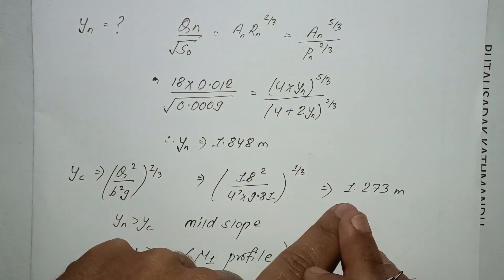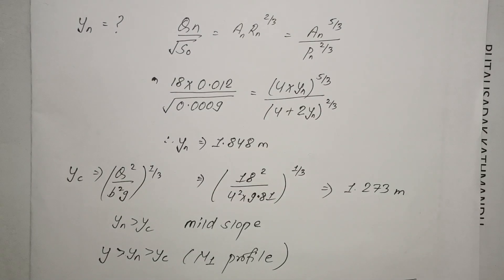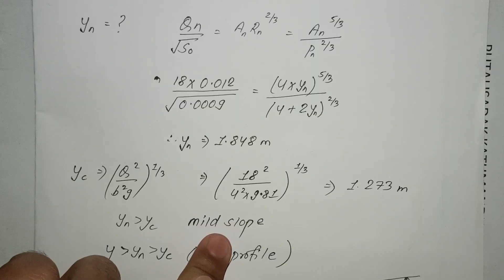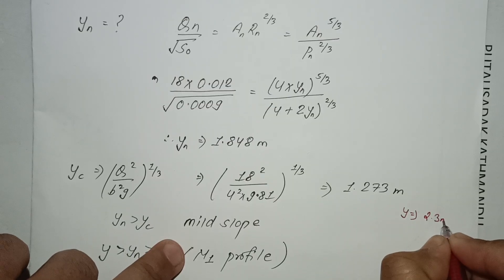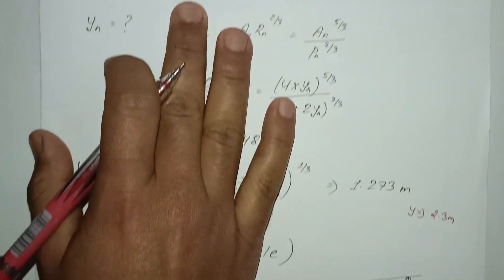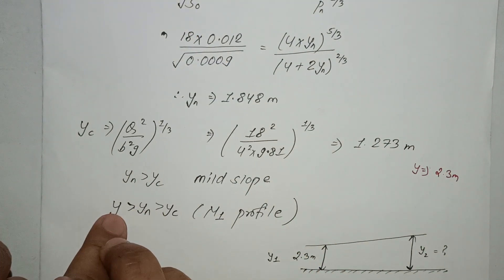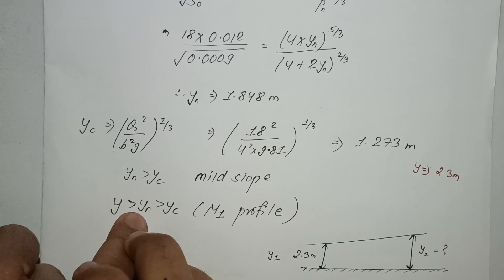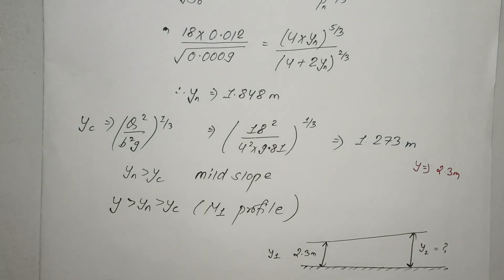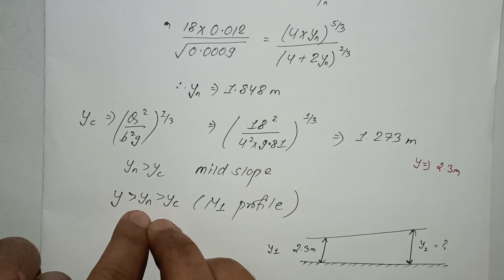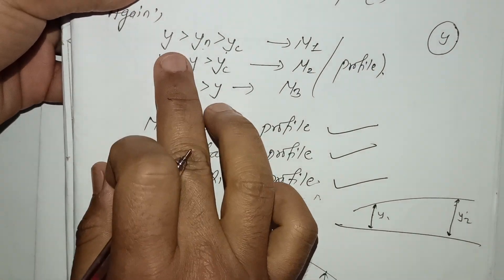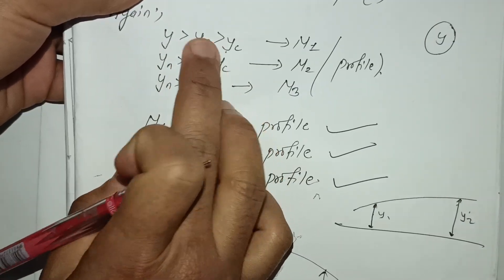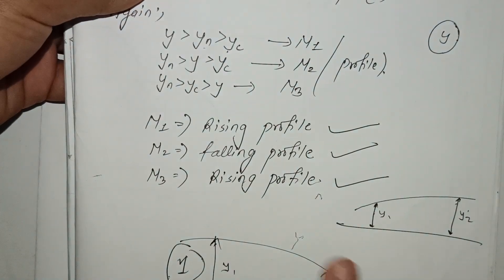yn is greater than yc. Since y is greater than yn which is greater than yc, this is an M1 backwater profile — a rising profile. This is our yn profile and the flow is subcritical.